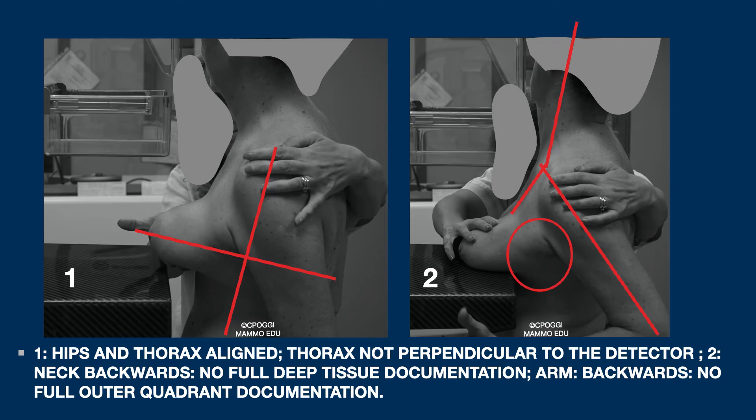Hips and thorax are aligned here, but the thorax is not perpendicular to the detector. In this second image, the patient's neck is bent backwards, and this prevents documentation of the tissue. You can see also that the ipsilateral arm is backwards, and this prevents correct documentation of the outer quadrant.